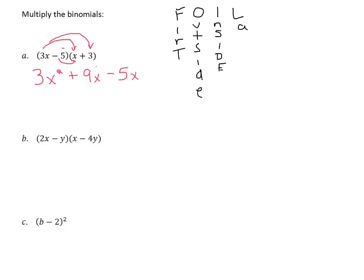And then the L stands for last. So we're going to multiply the last term. So you take negative 5 times the positive 3 is a negative 15. Now take a look. Do we have any like terms to combine? I've got a 9x and a negative 5x. So I'm now going to rewrite this. It's going to be 3x squared. 9x minus 5x is a positive 4x minus 15. And that's as far as we can go.